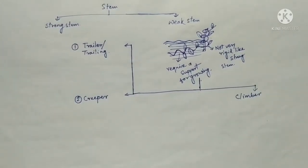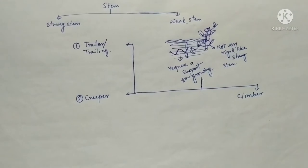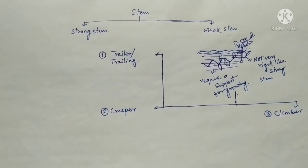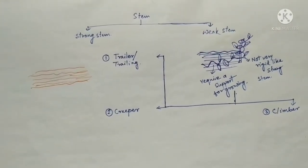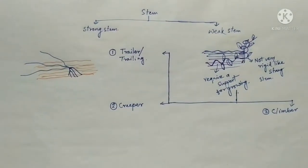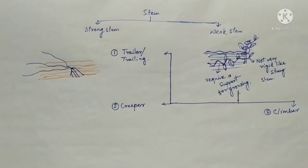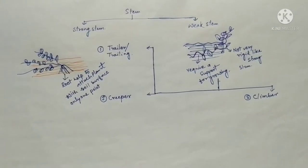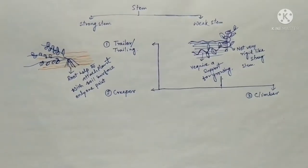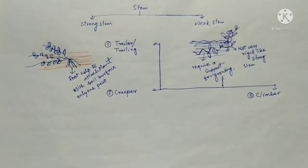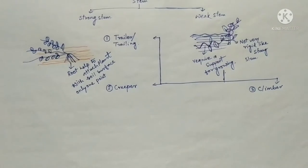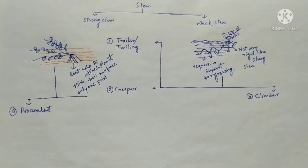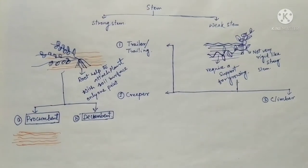In the case of the trailer type plant, the plant attaches with the soil surface by roots, and this root is present at only one point. So in the case of trailer type plants, only one rooting area is present. Trailing plants also divide into two types: procumbent and decumbent.